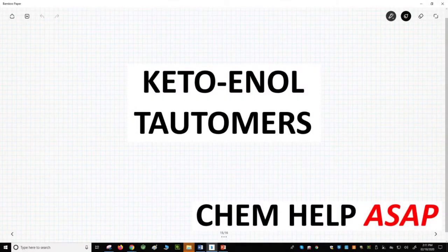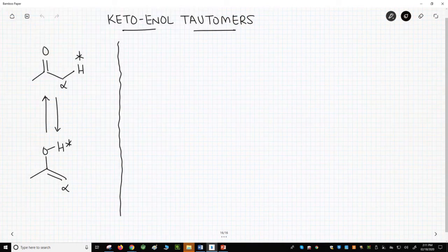Welcome to Chem Help ASAP. Let's talk about tautomers. Tautomers are a type of isomer that differs by the movement of a hydrogen.